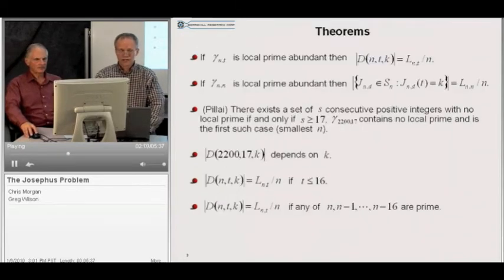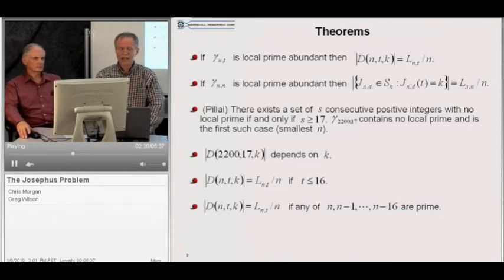There are a number of theorems we proved. One of the main ones is that if gamma n t is local prime abundant, then the number of elements in d n t k is given by this simple enumeration L n t over n. As a corollary, we proved that if gamma n n is local prime abundant, then the number of Josephus permutations in the symmetric group s n, such that J n d of t equals k, is equal to L n n over n. And that's independent of the choices of t and k.